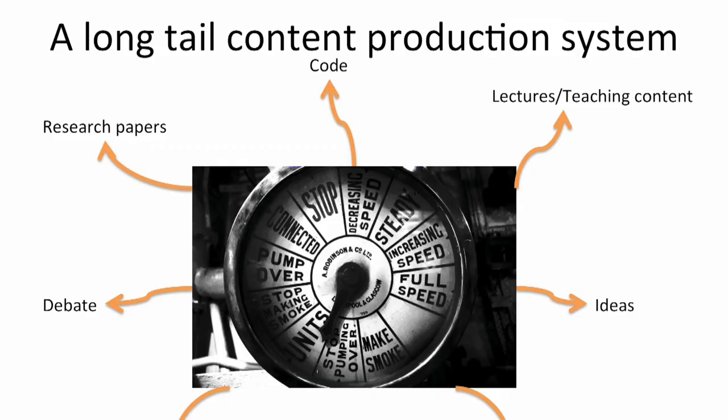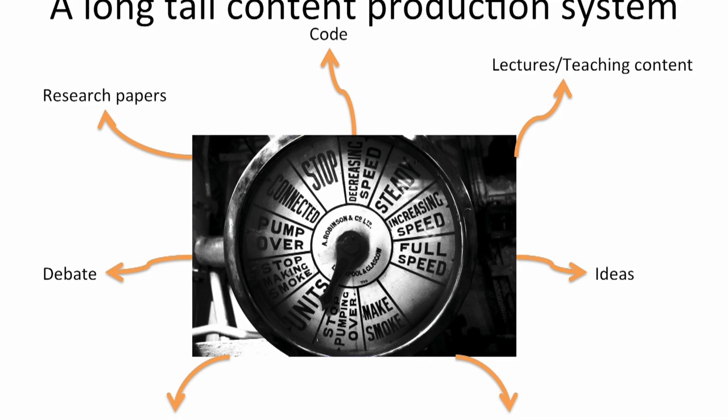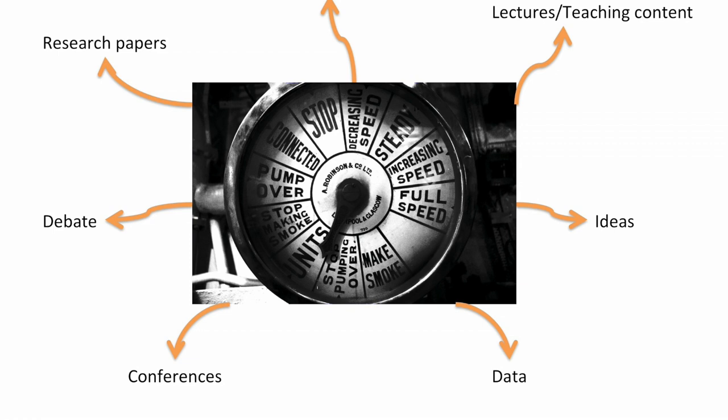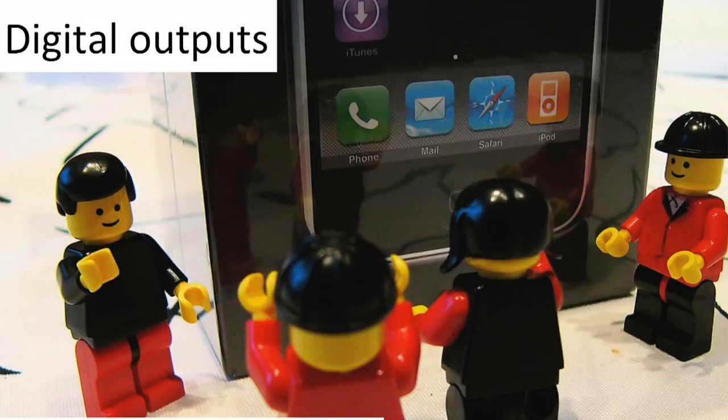Think of every academic as a content production system. Higher education is really a long-tail content production system — like Amazon making money selling few copies of many items. We produce research papers, software code, teaching content, ideas, data, conference talks and seminars, and we engage in debate. With not much effort, all those things can be made open access so people can access, share, and embed them — and we become the broadcasters.